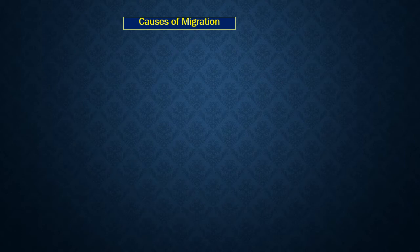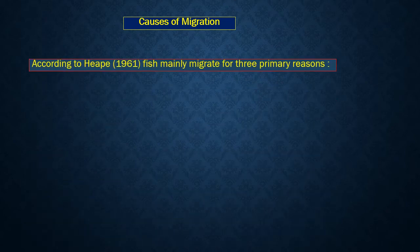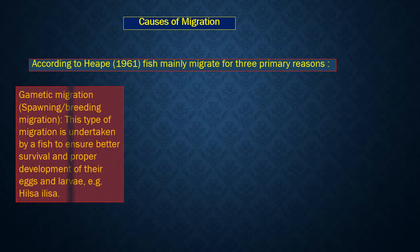Causes of migration. Some scientists regard migration in freshwater species to arise basically as a result of insufficient food supply in rivers, whereas in marine species it is due to more favorable conditions and better protection for developing eggs in rivers than in the open sea. According to Hipp in 1961, fish mainly migrate for three primary reasons. First, gametic migration, which is undertaken by a fish to ensure better survival and proper development of their eggs and larvae. For example, Hilsa elisa.